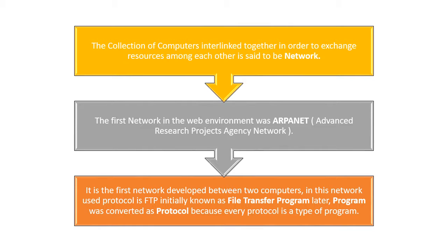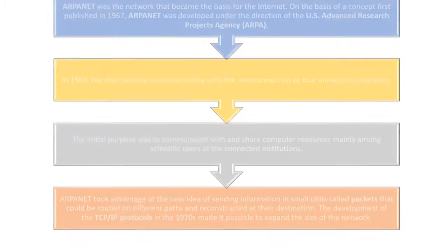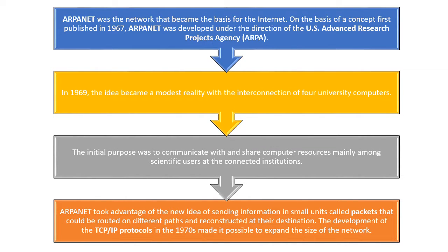ARPANET stands for Advanced Research Projects Agency Network. It is the first network developed between two computers. The protocol used in this network is FTP, initially known as File Transfer Program — later 'program' was converted to 'protocol' because every protocol is a type of program. ARPANET was the network that became the basis for the internet.